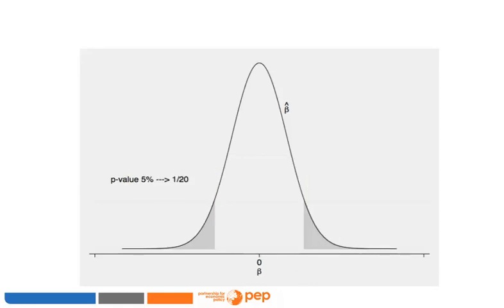It is conventional to dub p-values below 0.05 as statistically significant, meaning that under the null hypothesis the researcher has less than a 1-in-20 probability of obtaining the observed result by chance. The 0.05 standard is a matter of convention, not statistical theory, but it is so deeply entrenched that researchers should be prepared to indicate whether their experimental results are significant at the 0.05 level.